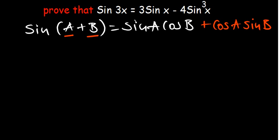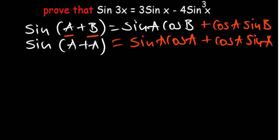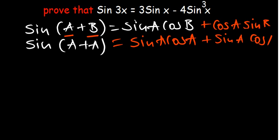Using the double angle formula, where we have sin(a + a), that gives us sin(a)cos(a) + cos(a)sin(a). Since multiplication is commutative, we can write this as 2sin(a)cos(a), since a + a = 2a. So sin(2a) = 2sin(a)cos(a). These are the two principles we're going to use.